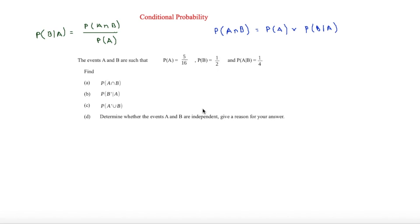This is Sam Stark and in this video we are looking at conditional probability. There are two formulas that we need to learn. The first one is probability of B given A, which is basically saying that given that A has occurred, what is the probability of B occurring?